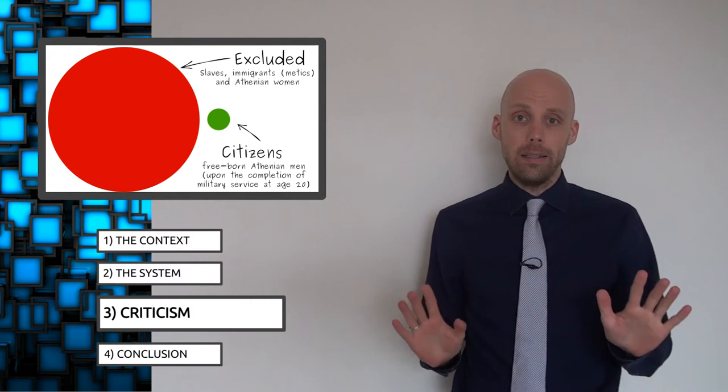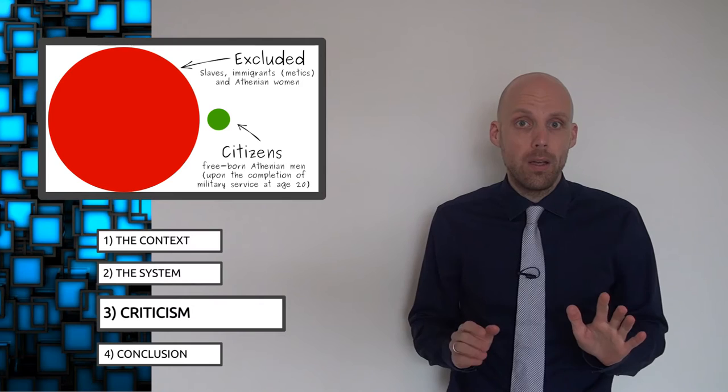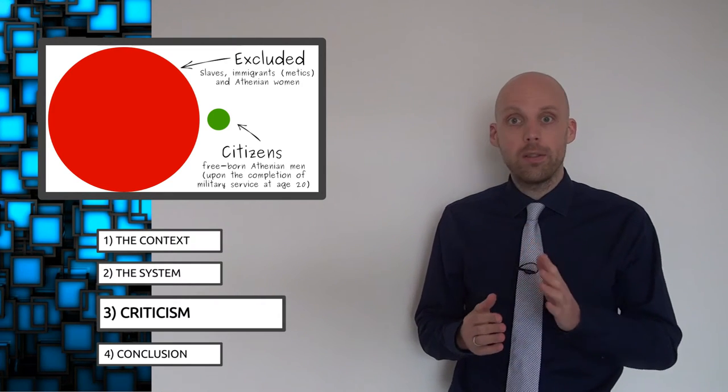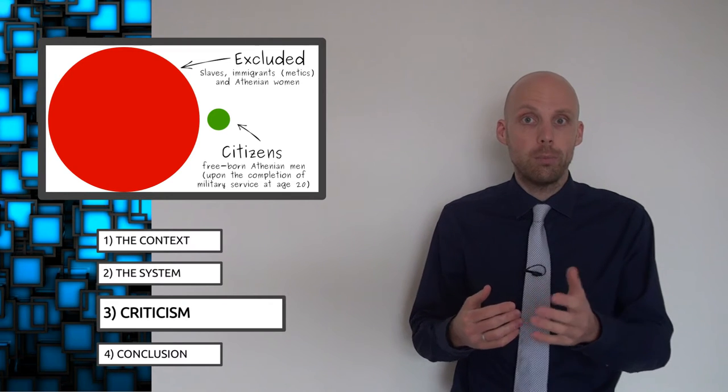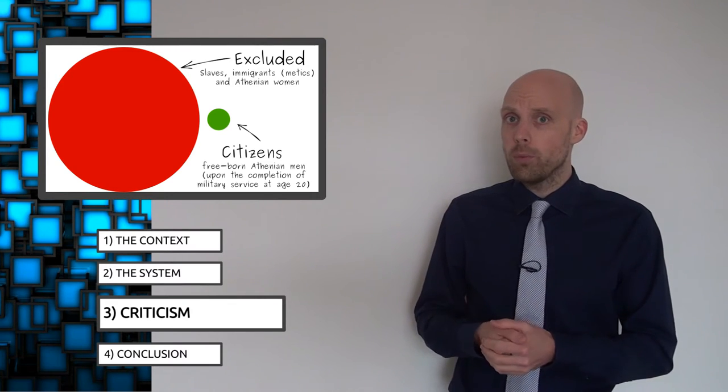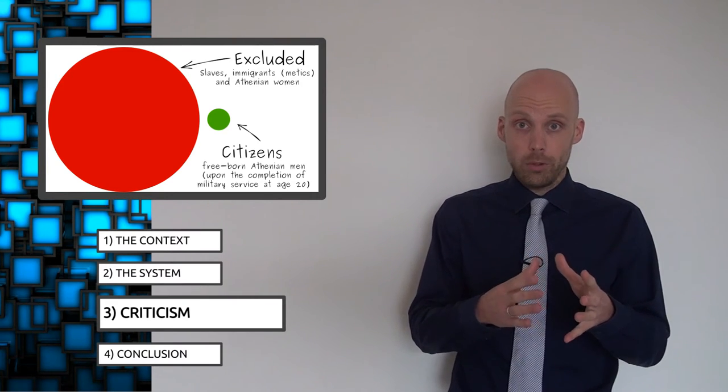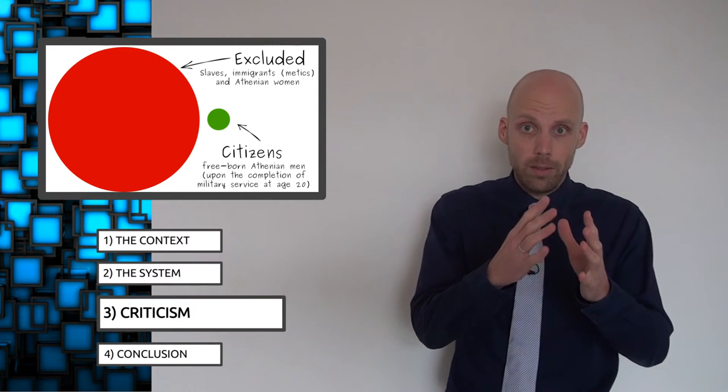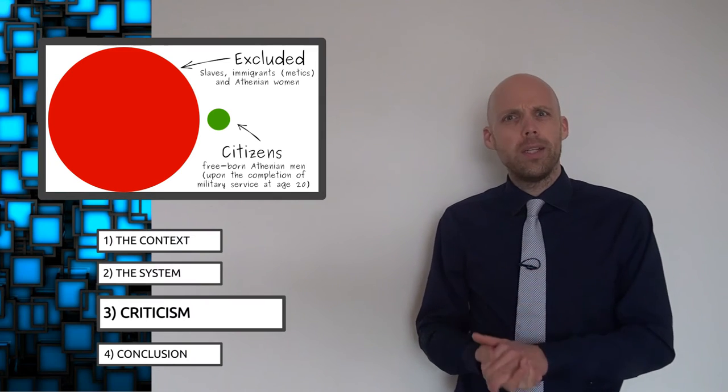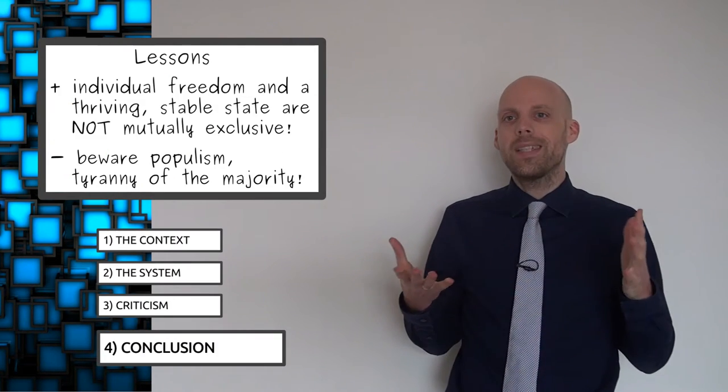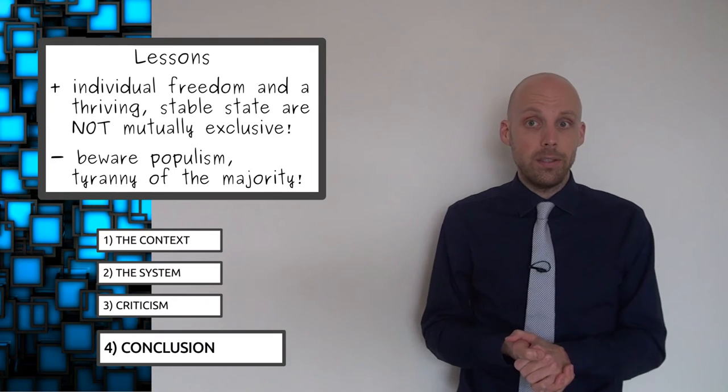But the biggest point of criticism by far has to be reserved for the treatment of women. Women were completely sidelined in ancient Athenian society. Their legal status was always associated with the nearest male relation, a father, a brother, or a husband. The status of women was criticized in theatre and literature at the time. Which means that the Athenians knew their treatment of women was unfair and yet they failed to do anything about it.